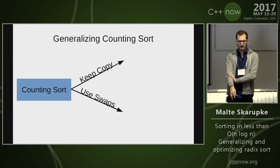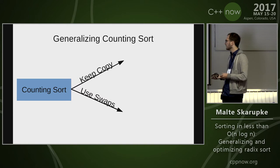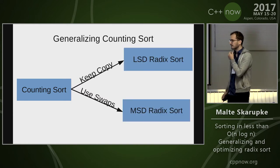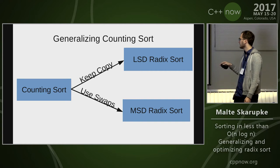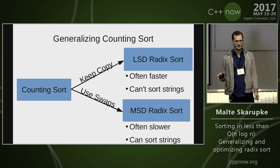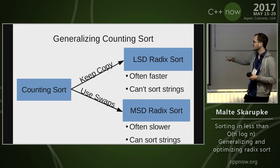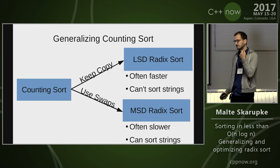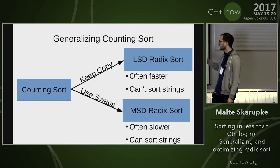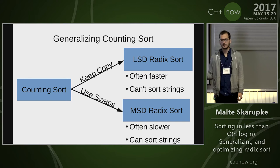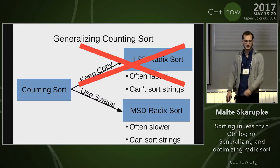When generalizing counting sort, there are two paths: keep it as a copying algorithm, or make it in-place using swaps. These lead to two different radix sorts: least significant digit radix sort and most significant digit radix sort. The LSD version is often faster but hasn't been generalized to work on strings. The MSD version has been generalized, and since we want a replacement for standard sort which is in-place, we focus on the swapping radix sort.